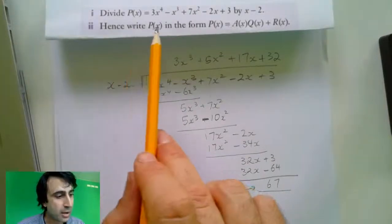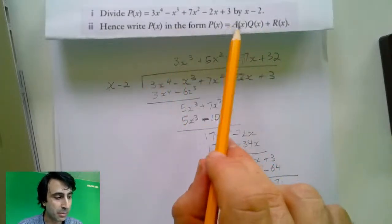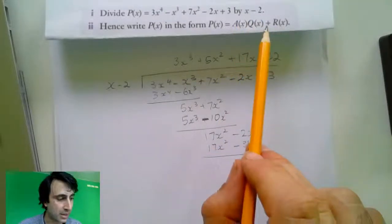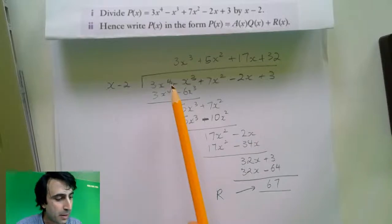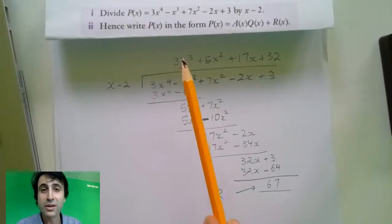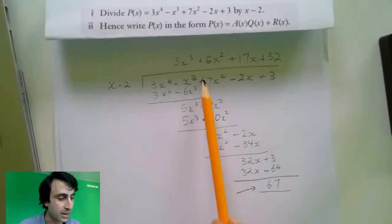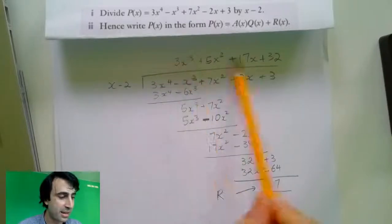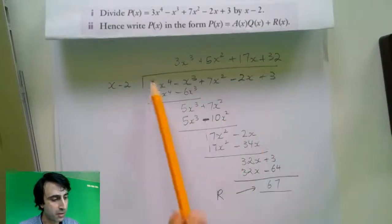It says, hence, write function P in the form of a number multiplied by another number. Or should I say, a function multiplied by another function, plus another function. And so, what on earth are we actually doing here? What we're doing is we're finding two factors of that. Two factor functions that multiply together to make that. In other words, that multiplied by that plus the remainder will give us our parent function.